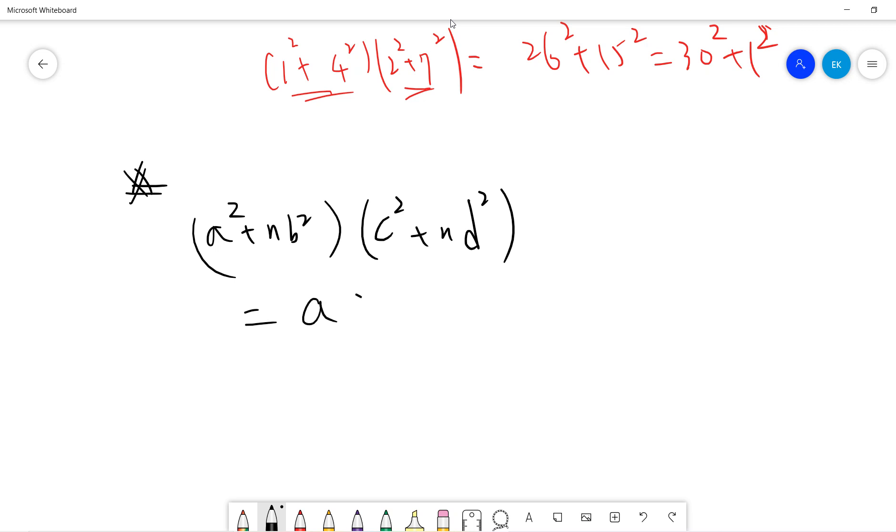It can be easily proved as (ac-Nbd)² + (ad+bc)²·N. Also, it equals (ac+Nbd)² plus N(ad-bc)². This is the more general form, which is more interesting.